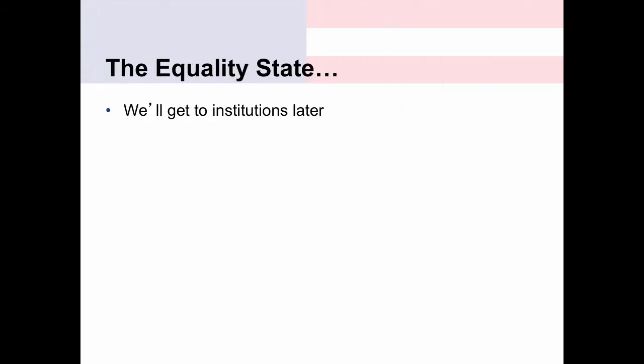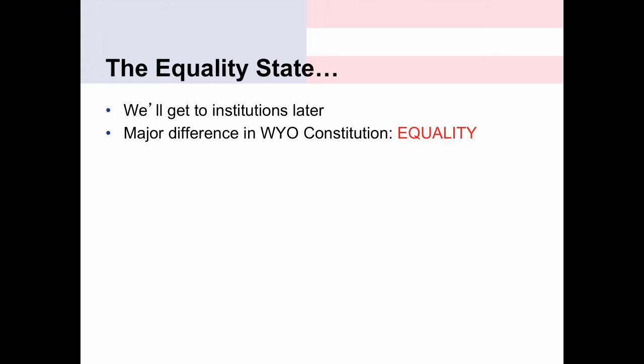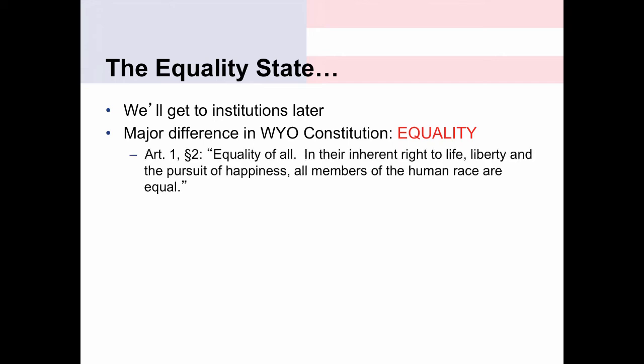We're going to get to the institutions later — the legislature, the executive, and the judiciary. But the other major difference between the U.S. and the Wyoming Constitution has to do with the notion of equality. You'll notice that the book we use for Wyoming politics is called The Equality State, and this is why: the Constitution of Wyoming was one of the first to actually make equality a fundamental individual right.